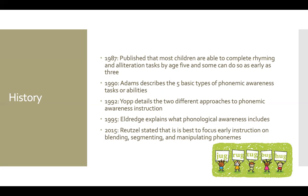Yap also says that research has shown explicit phonemic awareness instruction is best for increasing reading and spelling achievement. According to Phonics A-to-Z by Blevins, in 1995 Eldridge explains that phonological awareness includes words within sentences, rhyming units within words, beginning and ending sounds within words, syllables within words, phonemes within words — which is phonemic awareness — and the different features of phonemes.